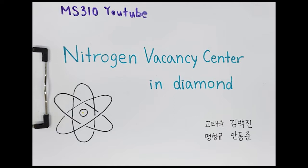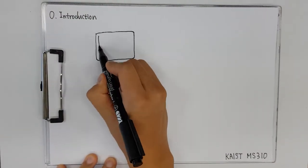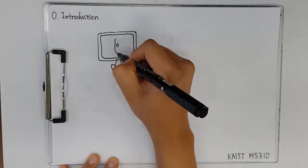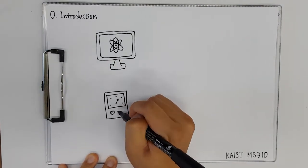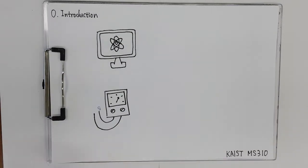Nitrogen Vacancy Center is the main structure for some future technology. For example, Nitrogen Vacancy Center is the most basic structure for quantum computers and used for ultra-fine magnetic field detectors.